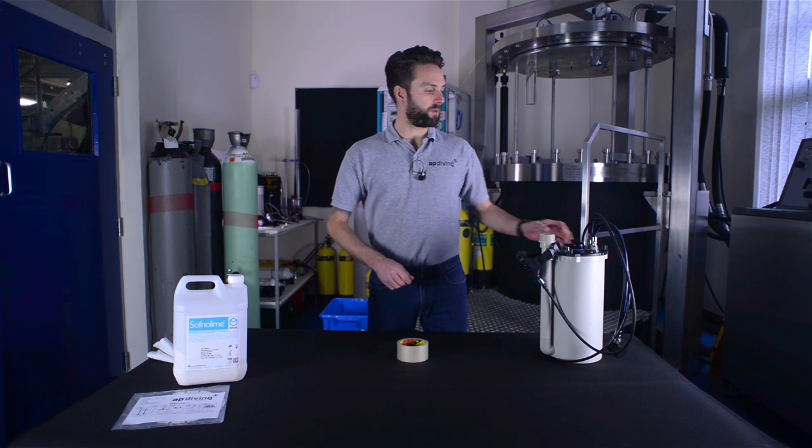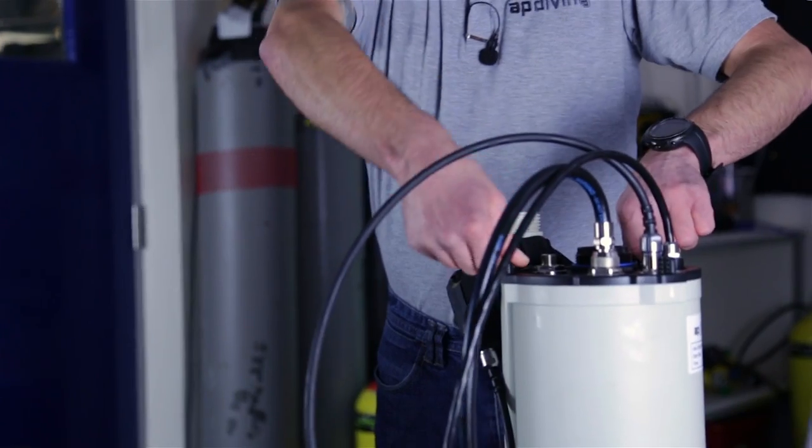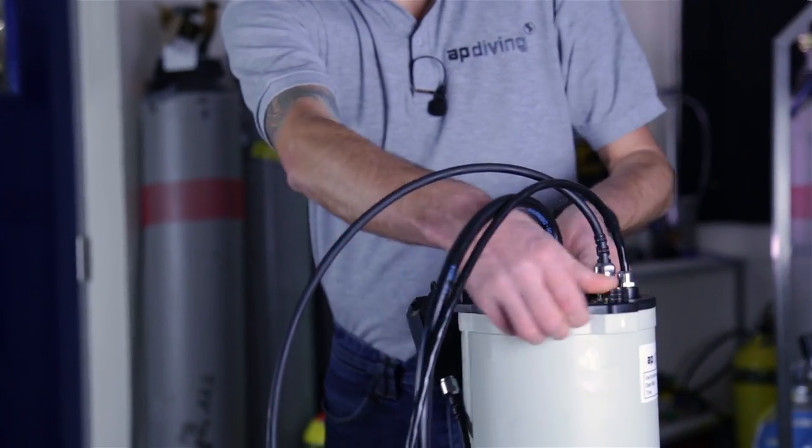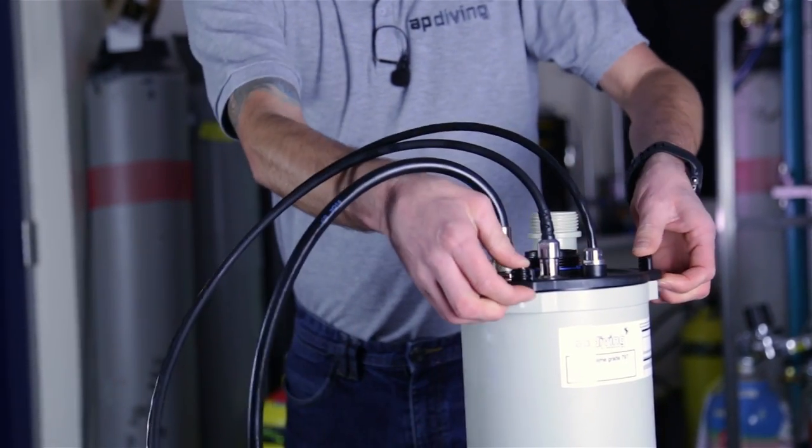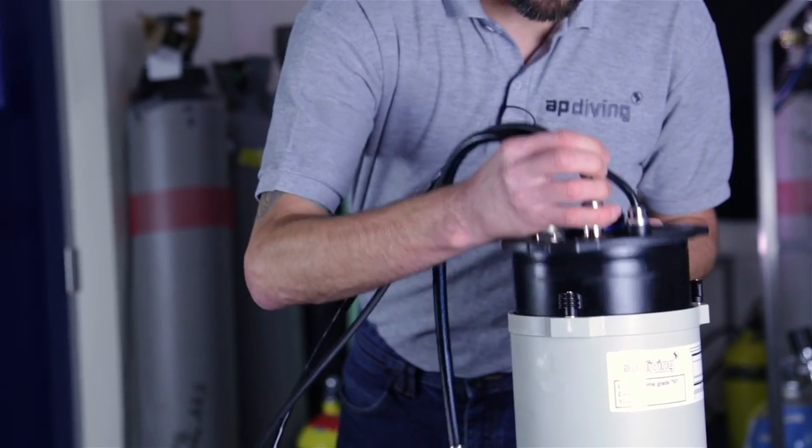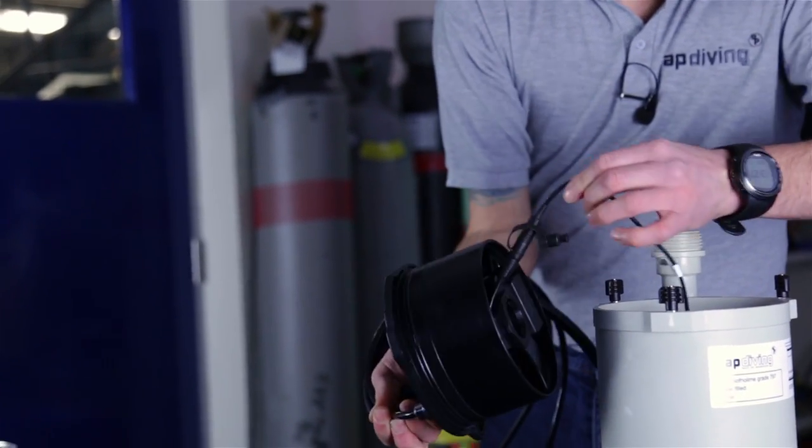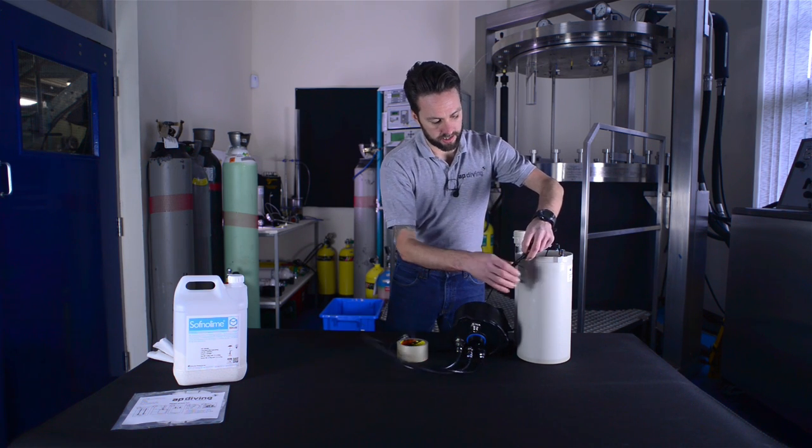First we need to remove the lid from the scrubber, so you lift and twist the three paddles on the top and it should pop off. Being careful not to pull any of the wires inside, carefully lift the lid off. This one has got a temp stick connected.